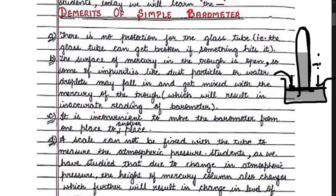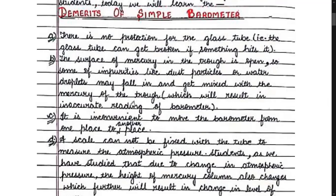Moreover, it is very inconvenient to move this barometer from one place to another. A scale cannot be fixed with the tube to measure atmospheric pressure, and since the change in mercury level indicates atmospheric pressure, it was very tough to put a scale on it. So all these were the demerits of a simple barometer.